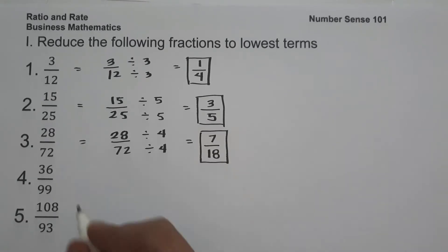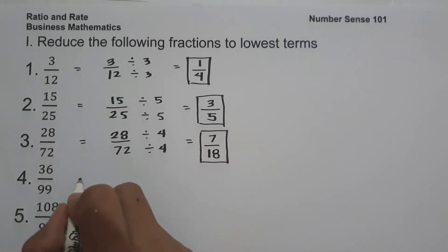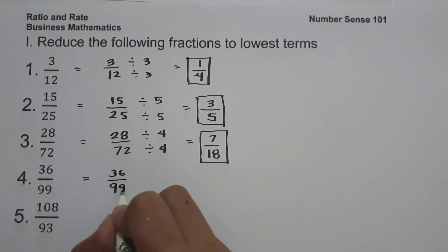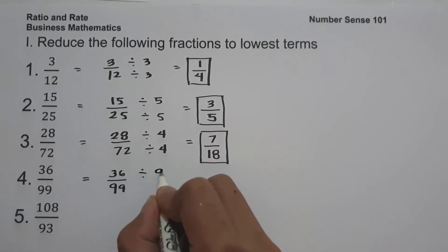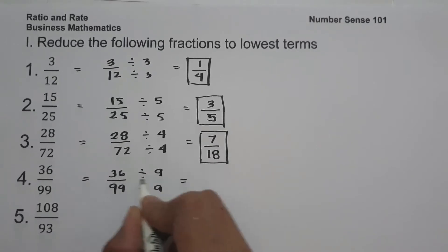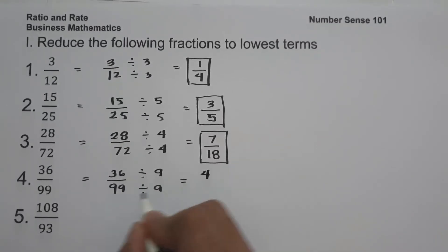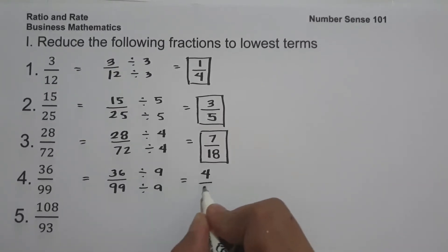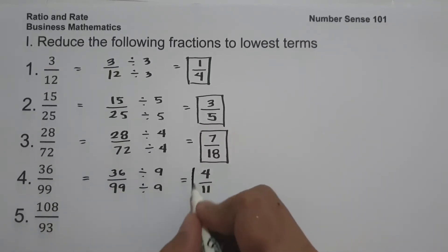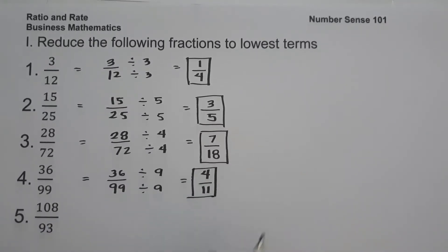On number 4, we have 36 over 99. The greatest common factor between 36 and 99 is 9. Let us divide the numerator and the denominator by 9. 36 divided by 9 is 4, and 99 divided by 9 is 11. Therefore 36 over 99 equals 4 over 11.